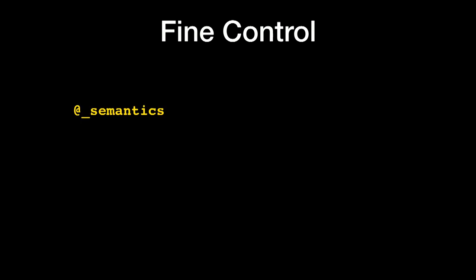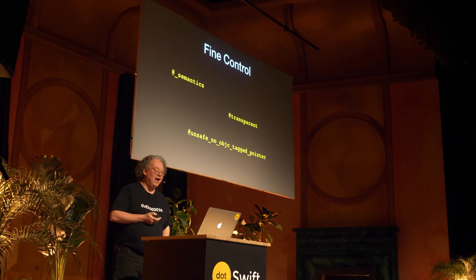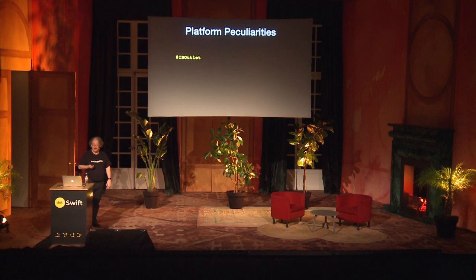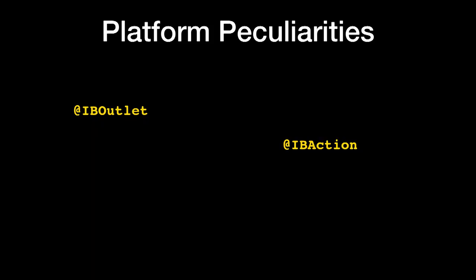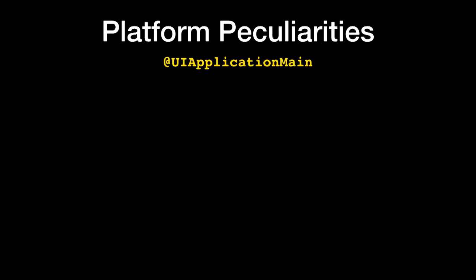Then there's undocumented stuff like @semantics, which gives hints the optimizer can use to improve its work. @_transparent, controlling where inlining happens when your code is compiled. And I love this one: @_unsafeNoObjCTaggedPointer — it just sounds cool. It controls whether you can use certain Objective-C objects that use different bits inside the pointer for shorthand reference counts or other metadata. And then things that are purely iOS — Linux people won't see these: IBOutlet, IBAction to hook up a function called from a button, @available to tag functions or classes for availability checks, and UIApplicationMain.